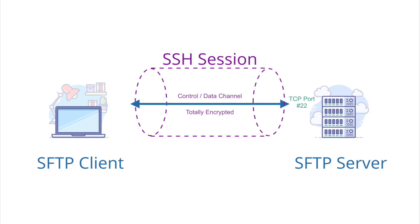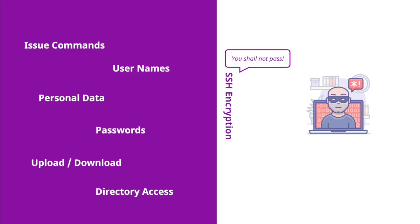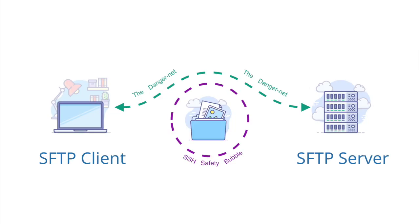SSH, or the Secure Shell, acts as a privacy layer for your connection, establishing a secure channel between your local computer and a remote computer or server. This helps ensure that important information like usernames, passwords, and personal data aren't sniffed by someone maliciously. Additionally, encryption helps ensure your data isn't visible in plain text as it transfers over the internet. With SFTP, both commands and data are encrypted.